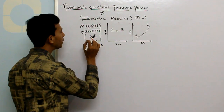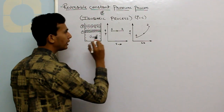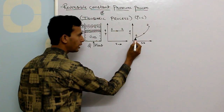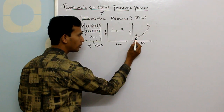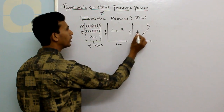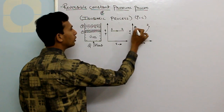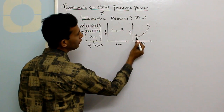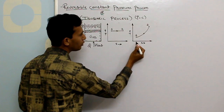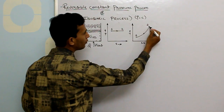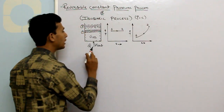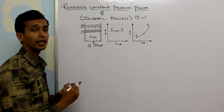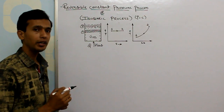Similarly, representing this process on a TS diagram, the initial state has temperature T1 which is lower than T2. So here you have a lower temperature and entropy, and here you have higher temperature and entropy due to the addition of heat. This was all about the diagrammatic representation, where it should be noted that P equals constant.